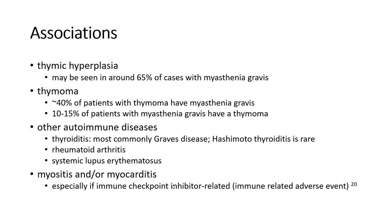Associations. Thymic hyperplasia may be seen in around 65% of cases with Myasthenia Gravis. Regarding thymoma: 40% of patients with thymoma have Myasthenia Gravis, and 10 to 15% of patients with Myasthenia Gravis have thymoma.